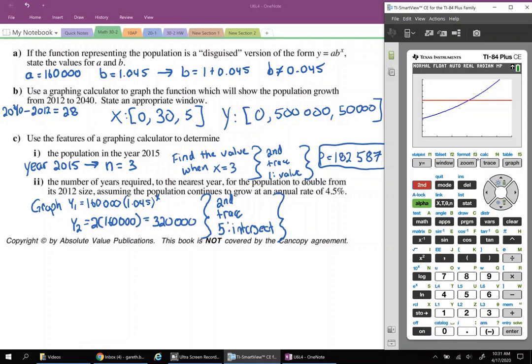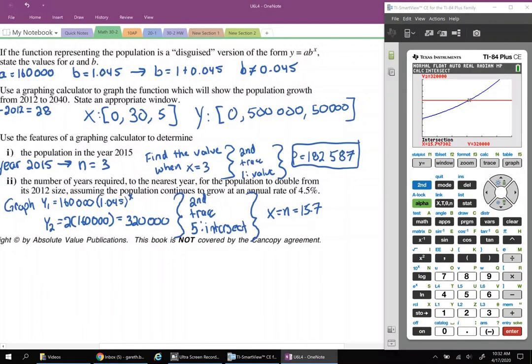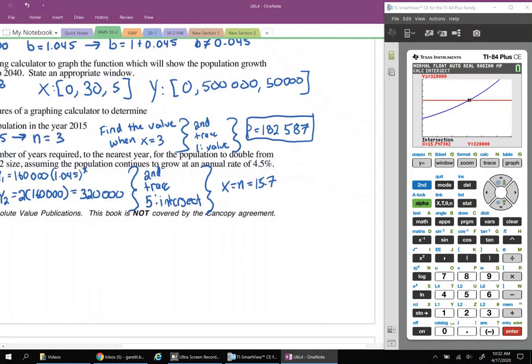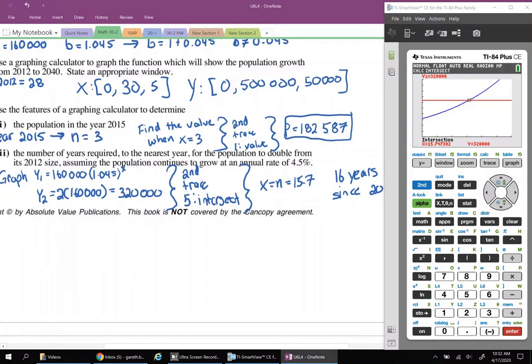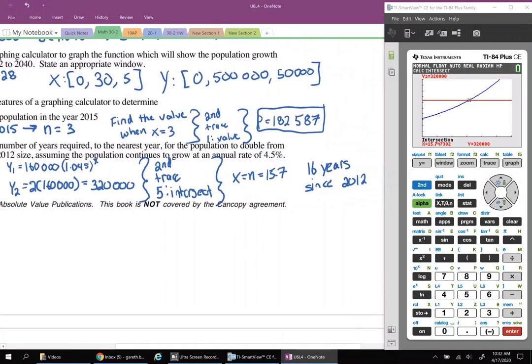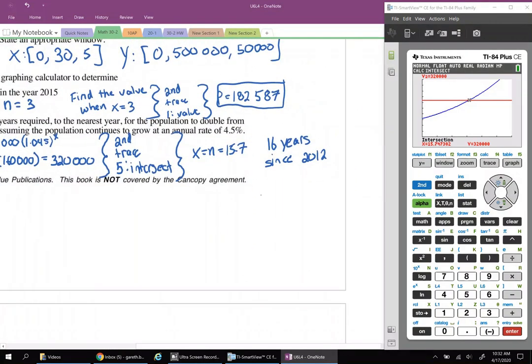So we're going to go second trace. I believe it's option five: intersect. And then the calculator prompts you: first curve, second curve, guess. Just make sure you're close to the intersection point that you want to calculate, which we are. Hit enter, enter, enter. And it tells me when X or when N equals 15.7 years. So let's round that because they want it to the nearest year. So we're going to say 16 years since 2012. And now, did they want the number of years since 2012 or did they want the actual year? The number of years required, well, 16 years, I suppose. But if they wanted to know the actual year, we'll go 2012 plus 16 years gives us 2028.